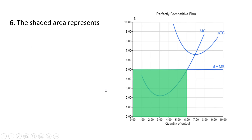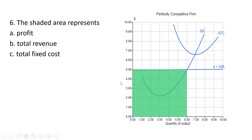Question six. This shaded area represents price times quantity again. The width is price and the length is quantity. Price times quantity is total revenue, answer B. It would be thirty dollars in this example.